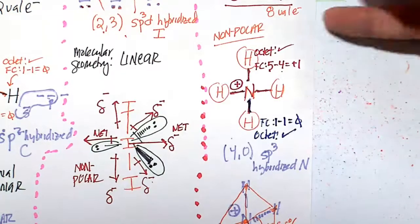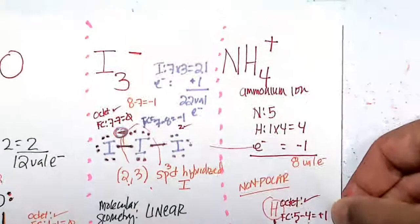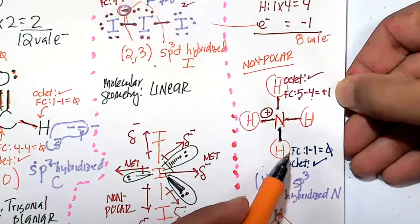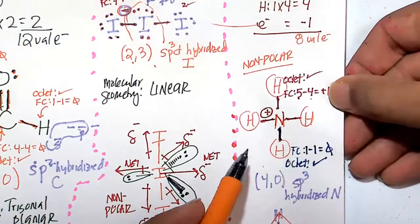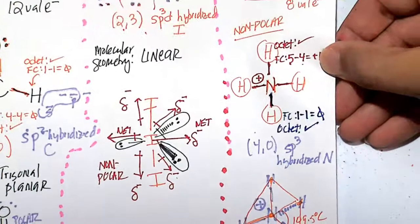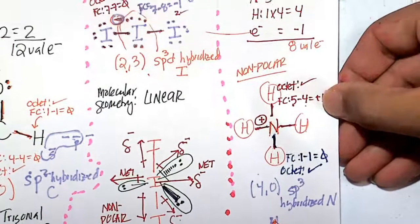And that's the structure of ammonium ion. NH4 positive, non-polar. There's no electronegative pulling by any of the very weak hydrogen atoms. And it has an sp3 hybridized nitrogen. The molecular geometry is tetrahedral.